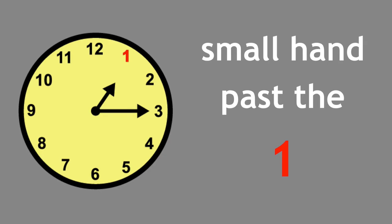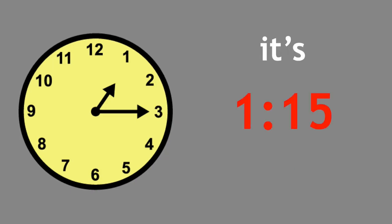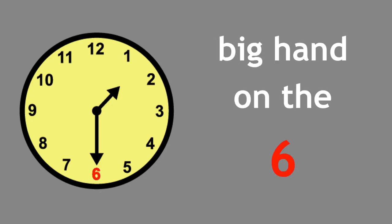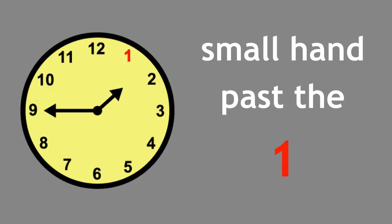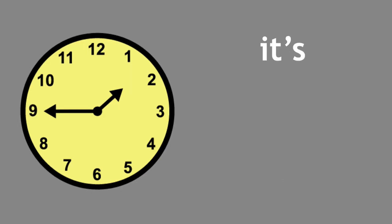Small hand past the one, big hand on the three, it's one fifteen. Small hand past the one, big hand on the six, it's one thirty. Small hand past the one, big hand on the nine, it's one forty-five.